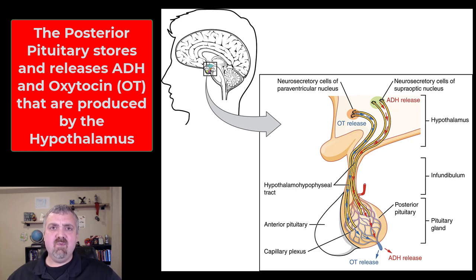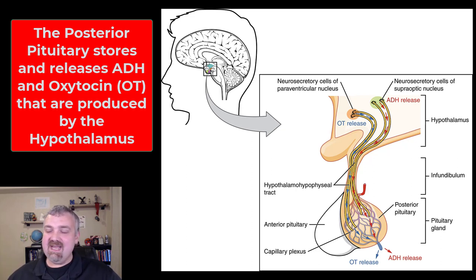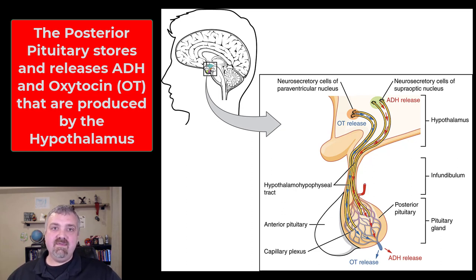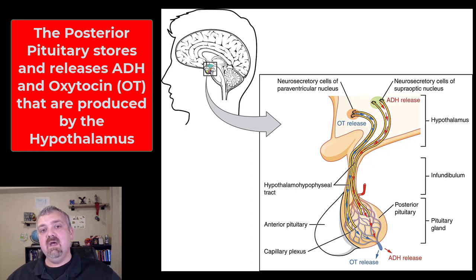Your body is much more concerned about keeping blood volume and fluid levels up than down — the problem is that now we have many people with high blood pressure, and the body isn't very good at bringing it down. Oxytocin is a pair-bonding molecule with all sorts of effects, but from an endocrine standpoint it leads to the contraction of smooth muscle, causing the ejection of a baby during labor and delivery, and the ejection of milk with the let-down reflex during lactation.